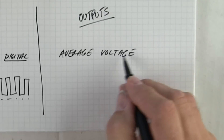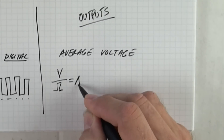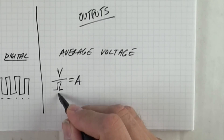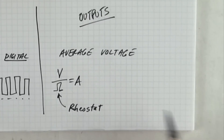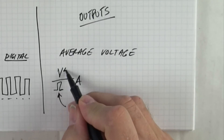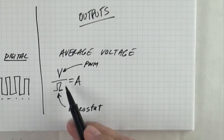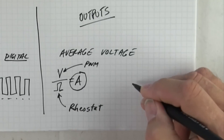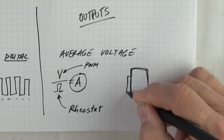Voltage is what controls amperage — volts and ohms make amps. If we're changing the resistance, that's a rheostat, and that will change amperage. Or we can change voltage, which in this case is PWM. Either changing the rheostat resistance or changing the PWM voltage will change the amperage output, and when it comes to a solenoid, that controls what the solenoid does.